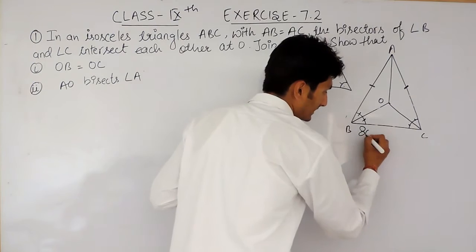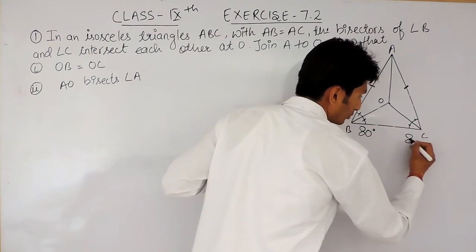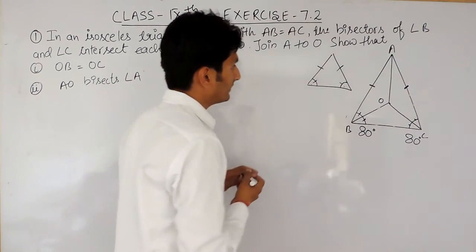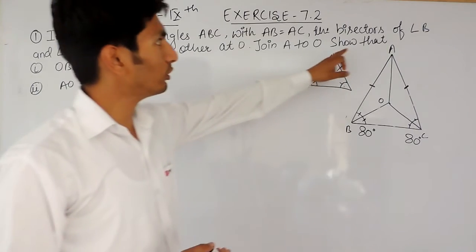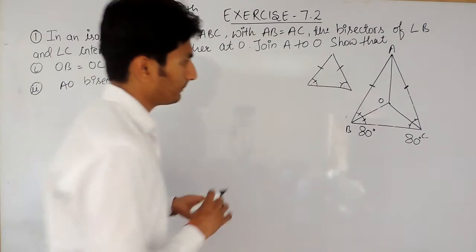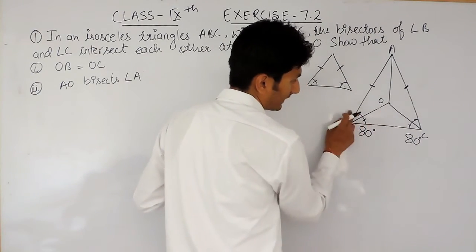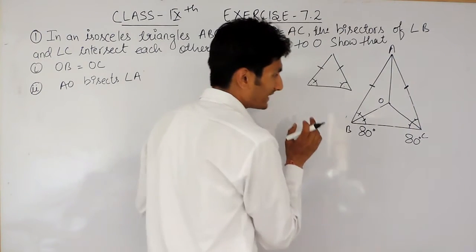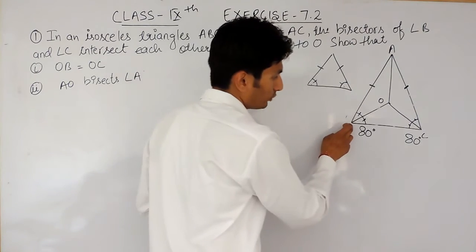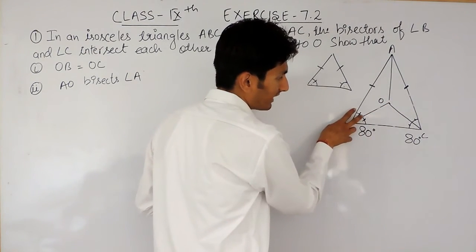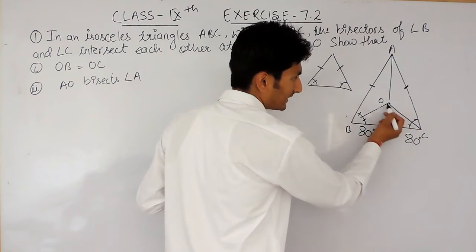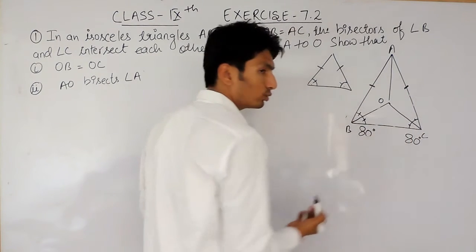It is given that the bisector of angle B and angle C intersect each other at O. This is the bisector of angle B. What does bisector mean? Bisector means when you divide something into two equal parts. If you are bisecting this angle, you are dividing it into two equal parts. Similarly, here you are bisecting angle C, meaning you are dividing angle C into two equal parts.